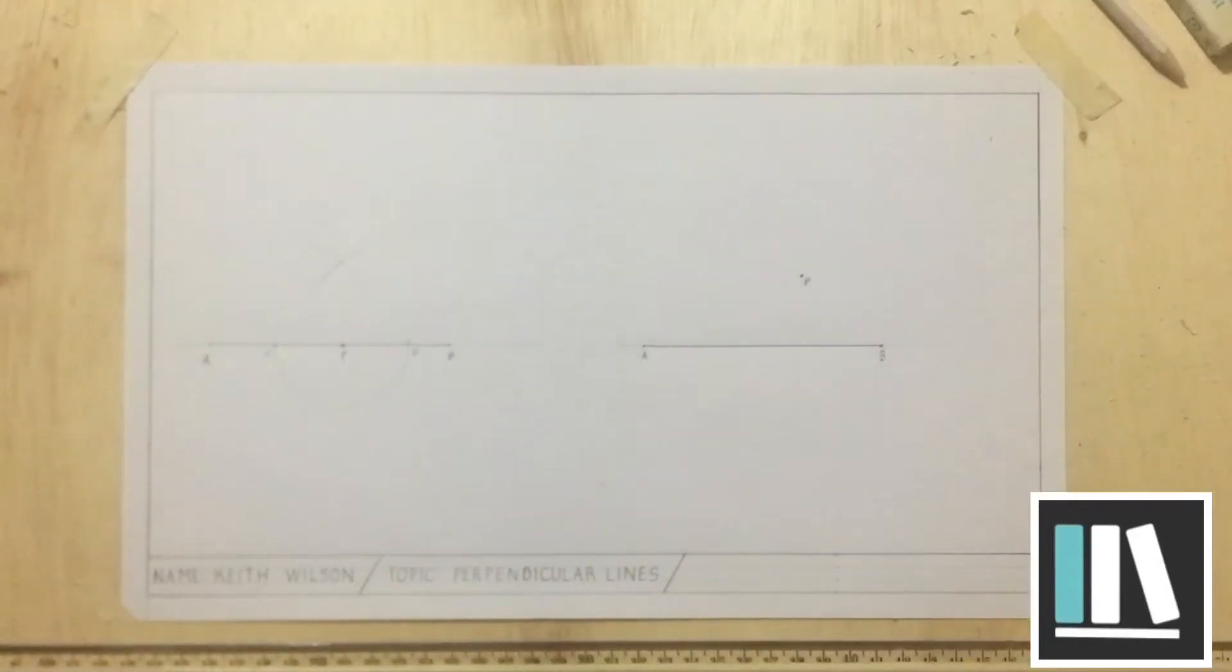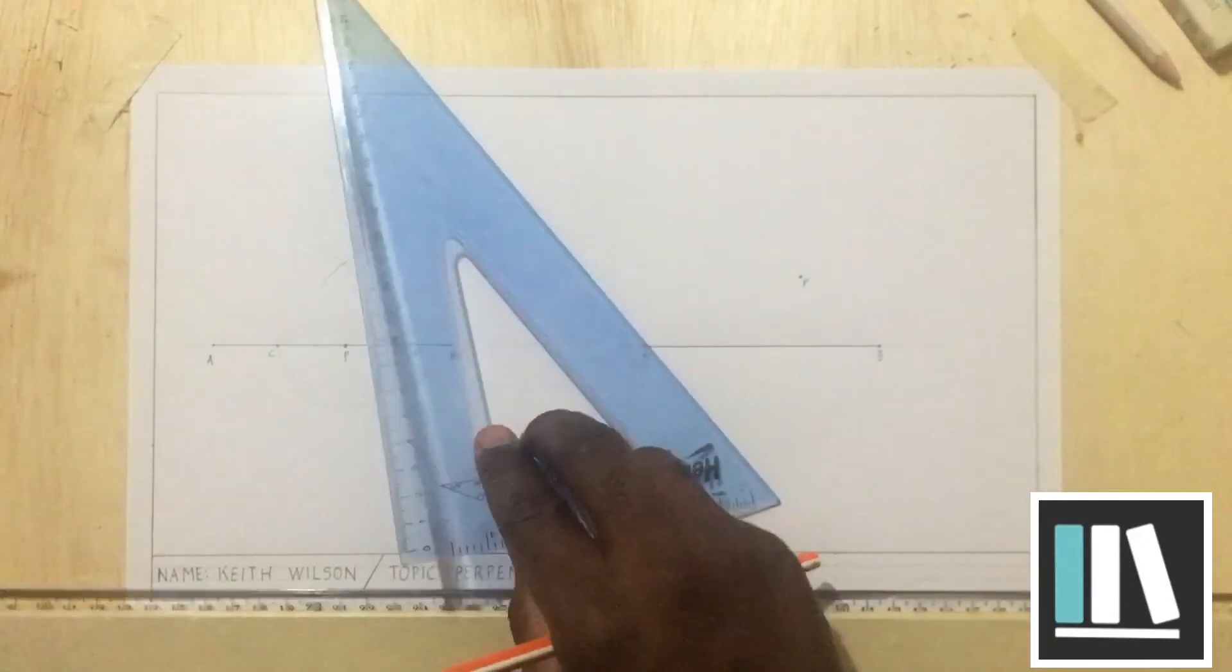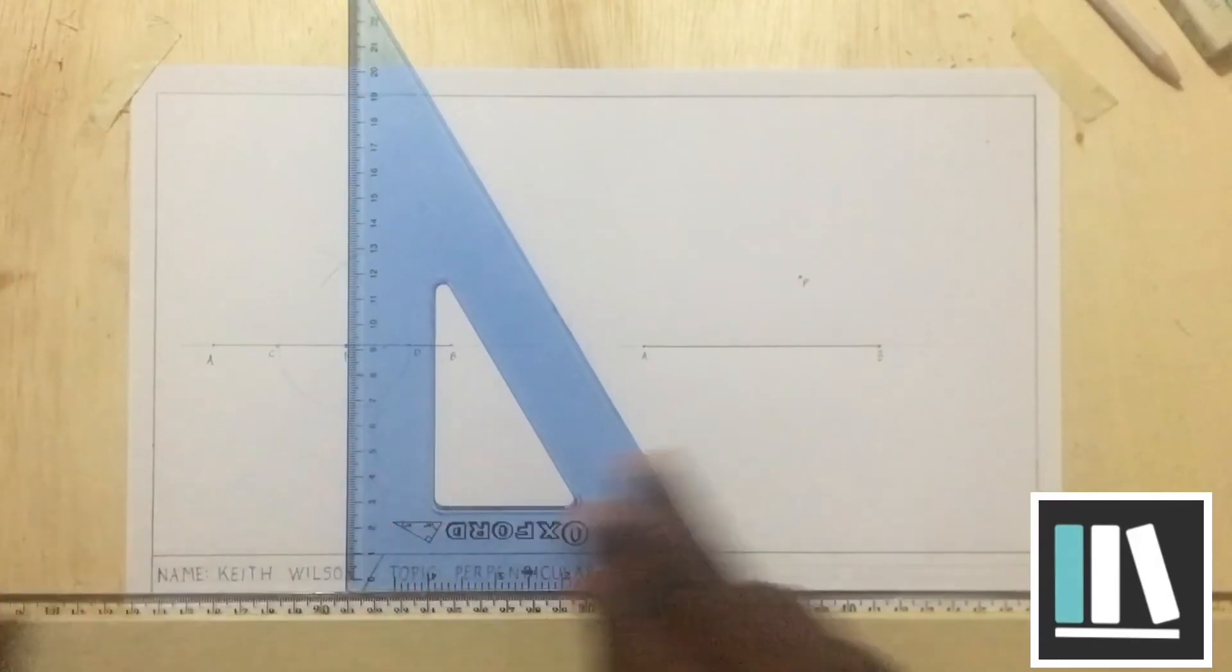After I have done this, I am going to simply take my set square to draw a line. I am going to do this in construction lines.